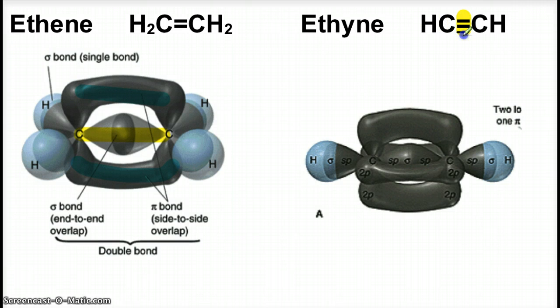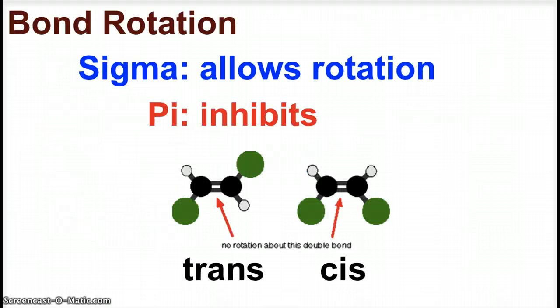Ethyne has a triple bond. The first bond is a sigma, and then the second and third bonds will be pi. What this does is it inhibits bond rotation. A sigma bond, a single bond, allows rotation between the atoms that are bonded. A pi bond inhibits this. This is a brief glimpse into some organic chemistry.